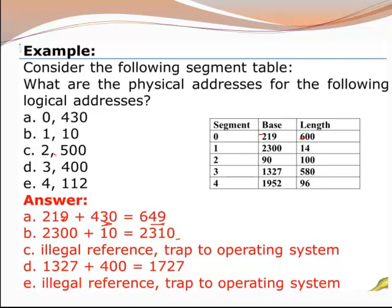Similarly, for logical address (2, 500): first we check the limit. Segment number 2 has a limit of 100 and we are trying to access offset 500. Since 500 is not less than 100, this is an illegal offset, so it is trapped to the operating system.